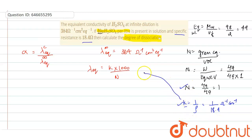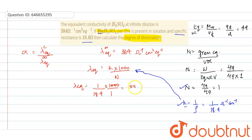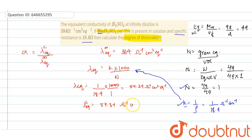Putting the values into the formula: equivalent conductivity = (1/18.4) × 1000 divided by normality 1. After calculating, we get 54.34 ohm⁻¹ cm² equivalent⁻¹.